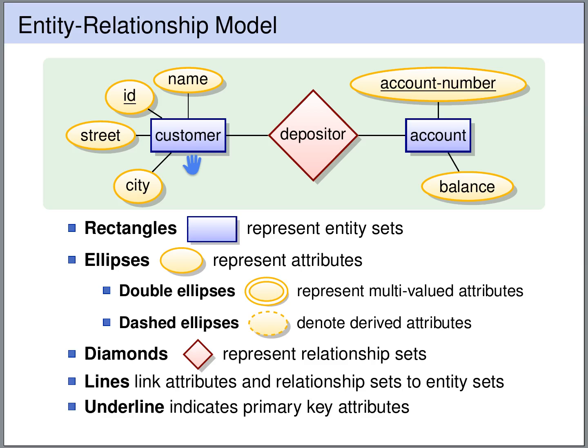The customer entity set has connected attributes: id, name, street, and city. And like we used to do before in the relational schemas, we underline the primary key attributes.